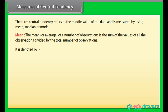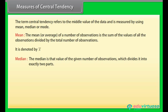The mean is denoted by x̄ (read as x bar). Median: The median is that value of the given number of observations which divides it into exactly two equal parts.